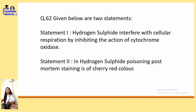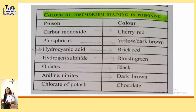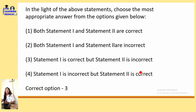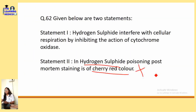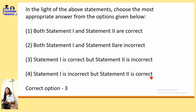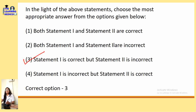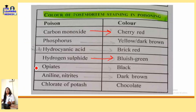Hydrogen sulfide interferes with cellular respiration by inhibiting the action of cytochrome oxidase. In hydrogen sulfide poisoning, post-mortem staining is bluish-green color — not cherry red. Carbon monoxide gives cherry red post-mortem staining, while hydrogen sulfide gives bluish-green. So statement one is correct and statement two is incorrect.